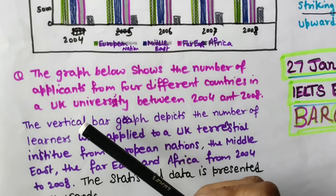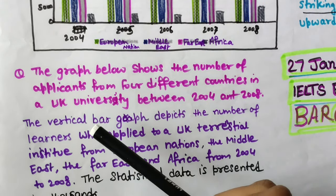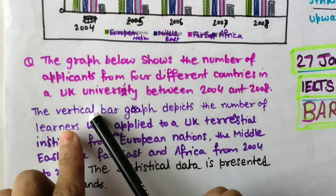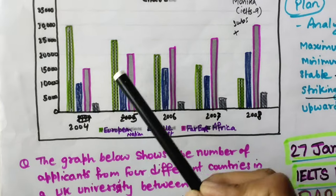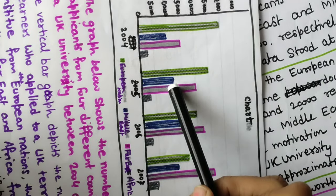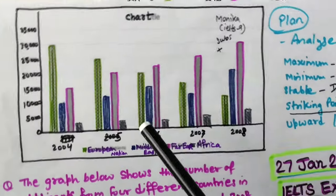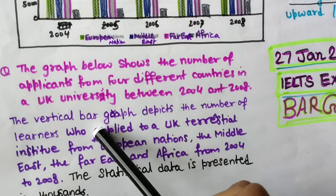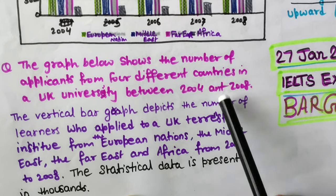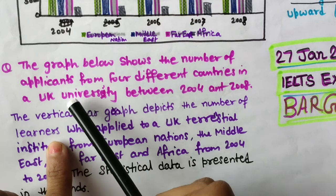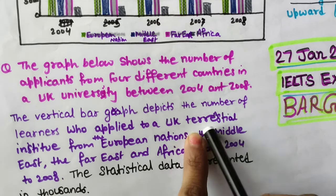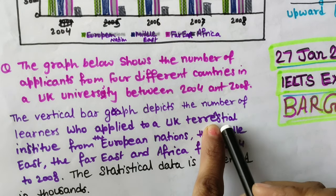Now coming to the introduction. The question statement must be paraphrased - nothing else. This graph is vertical. A vertical bar graph depicts - instead of 'shows' use 'depicts', 'illustrates', or 'delineates'. Write: 'The vertical bar graph depicts the number of learners' - instead of applicants I have written learners - 'who applied to a UK university' or 'a UK tertiary institute'.